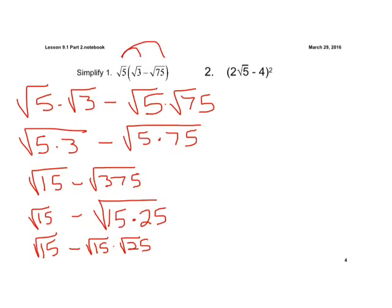We know what the square root of 25 is — that's our perfect square, that's going to be 5. So when we take the square root of 25, we have 5. Let's go ahead and write that out front of the 15. Remember, it's multiplication so we can switch the numbers around. And we have 5 square root of 15 minus this.